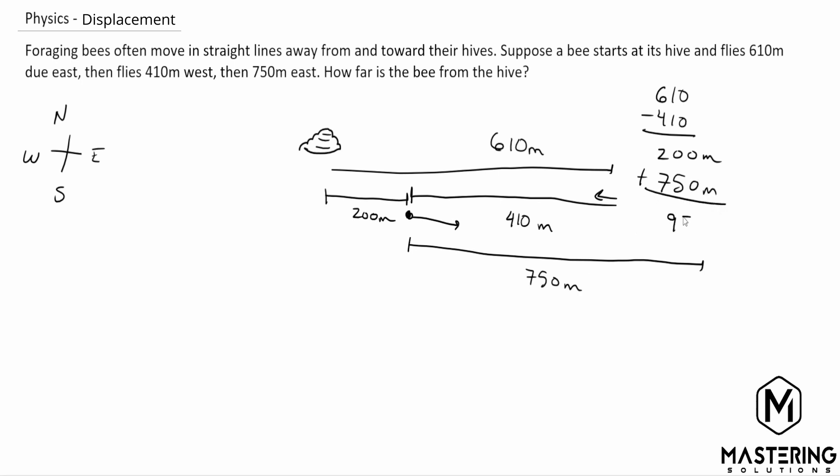the bee then goes another 750 meters. So the bee ends up at this spot, 950 meters directly away from the hive.